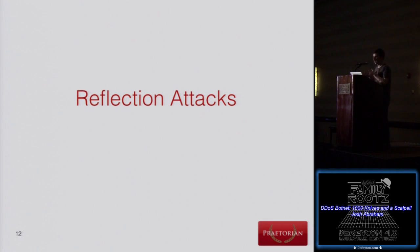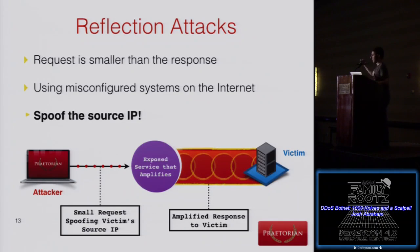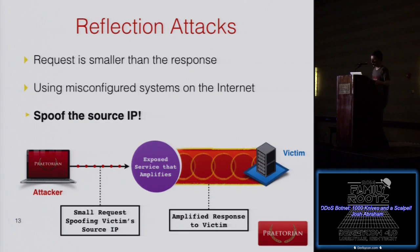Now let's dive into reflection-based attacks. As a bad actor on the internet, you scan for vulnerable systems and use those to attack your target. The bad guy uses his laptop, identifies an exposed service, spoofs the source IP address, and tells the NTP service 'I am this target over here.' The response to the UDP request goes to the victim. The attacker sends a small request and the response is huge — giving us the DOS.